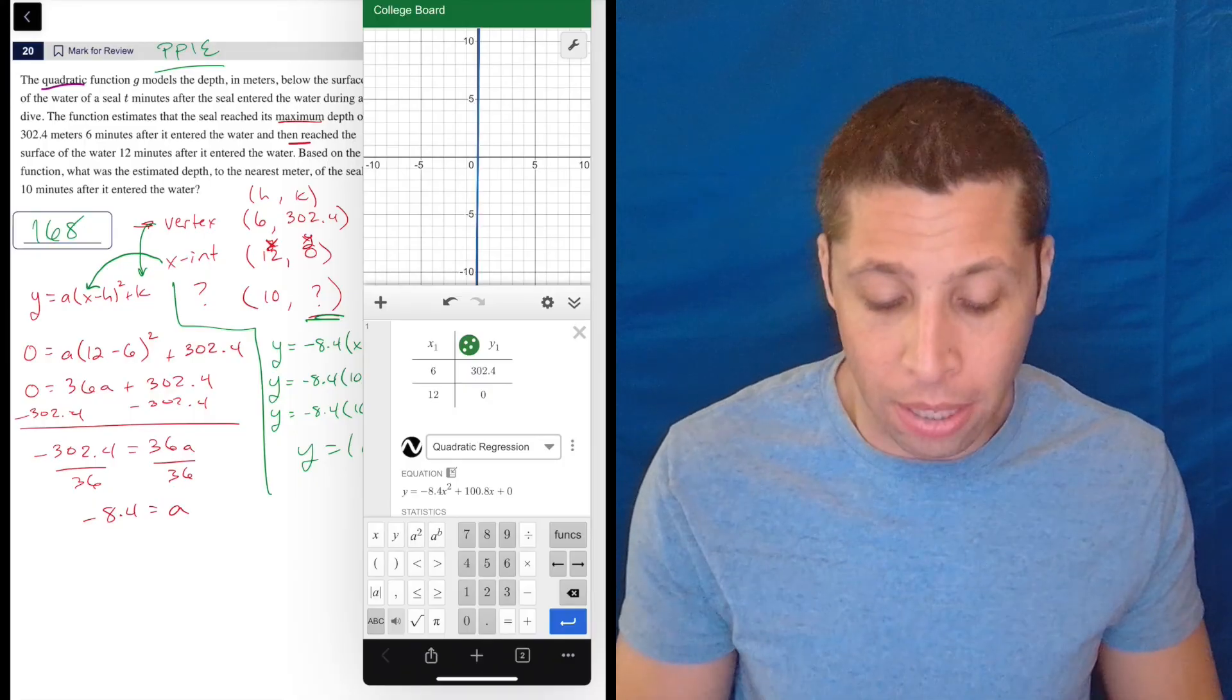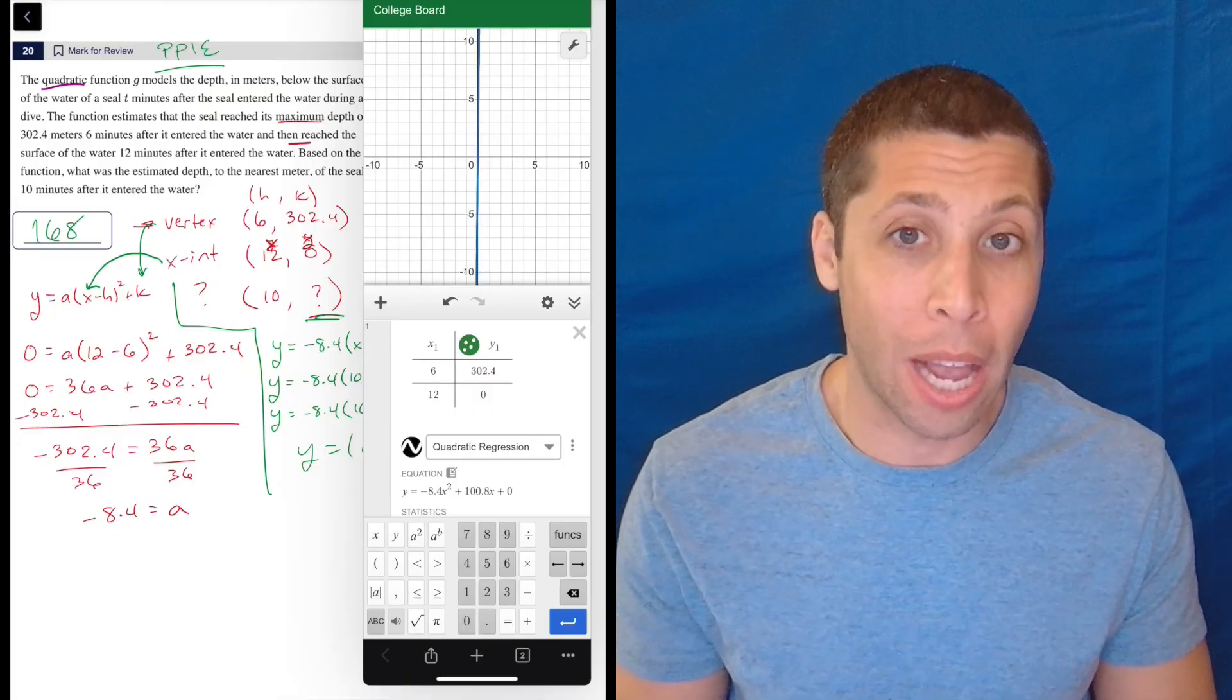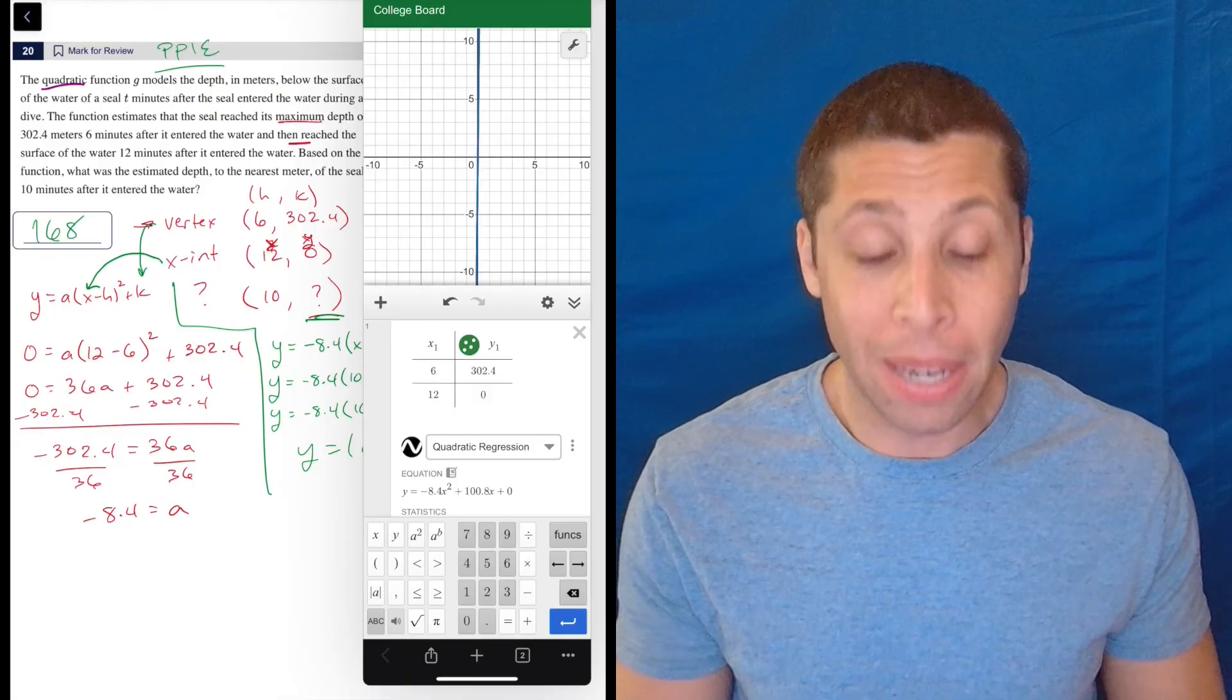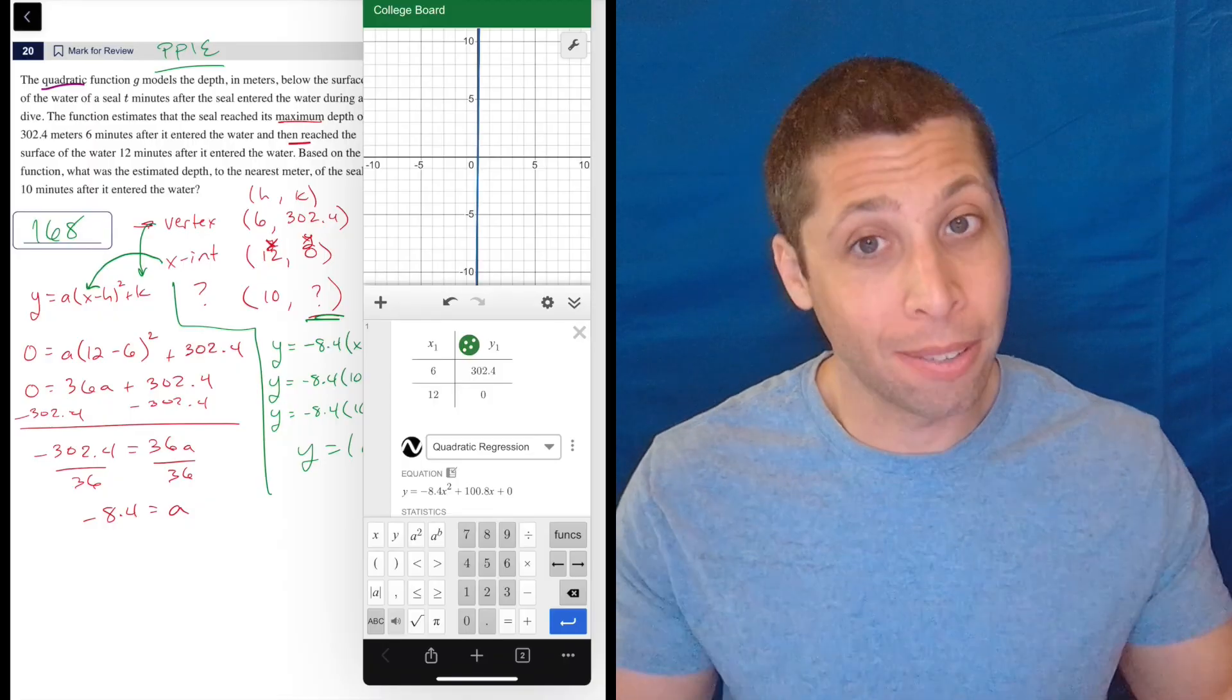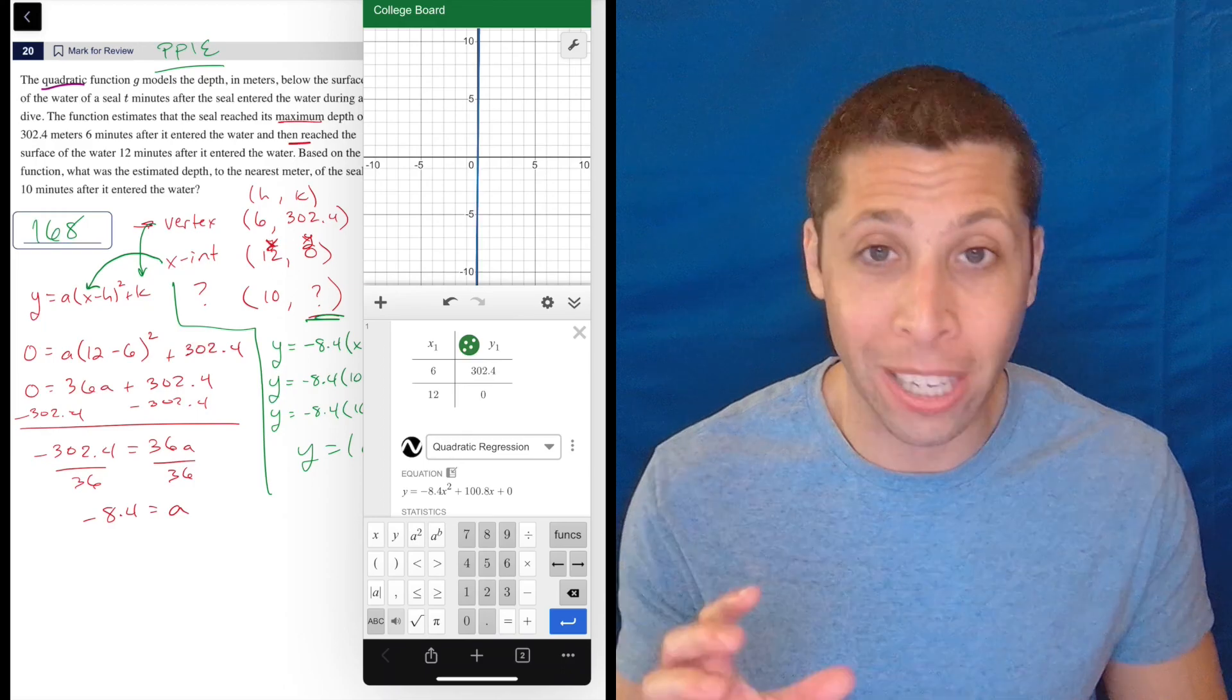But I wanted to start with the plug points and equations just to show you, but the regression really, really helps here. Tough one, but gettable. Anytime we have a quadratic, we should know what we're up against. It's pretty predictable. So hopefully you can target that question and get that right.